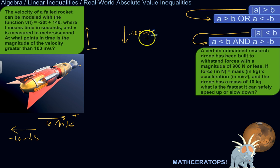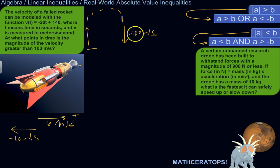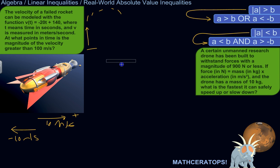So negative 100, negative 200, negative 150 meters per second — all those would count for this condition. The rocket is going to go up and come back down. We want to know at what points in time it's either going greater than 100 meters per second upward, or less than negative 100 meters per second downward. If this is hazy so far, don't sweat it — we'll set this up and then see what happens.